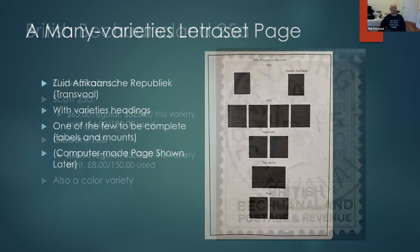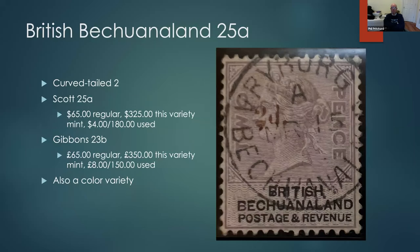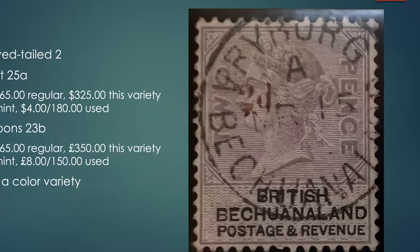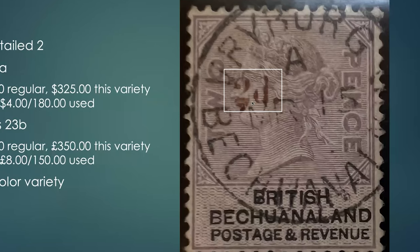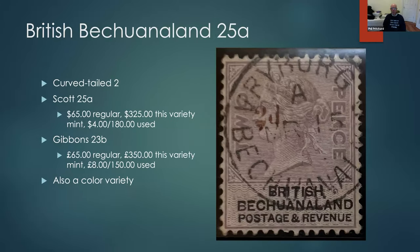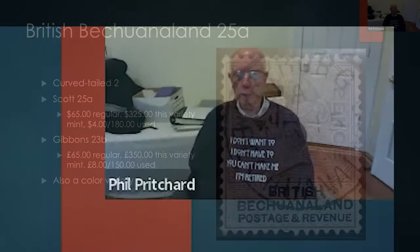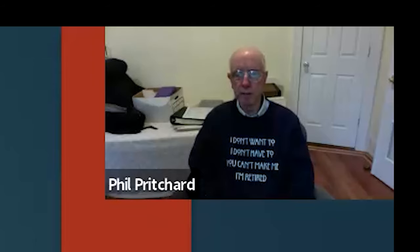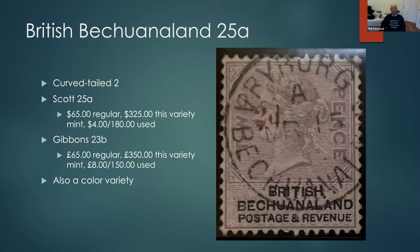Here's the first item, from British Bechuanaland — the variety of the curved tail 'two.' You can see the curve down here on the '2' tilts down a little bit. With overprints, they didn't necessarily have all the letters in the exact same font, or some were misformed like this one. So you get one or two stamps on the sheet that were printed differently.